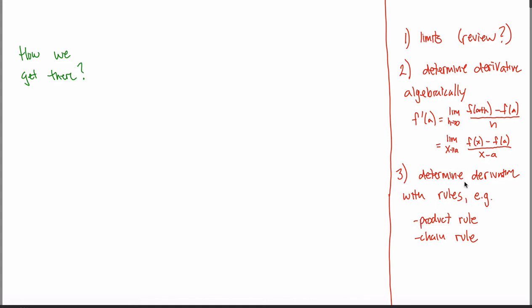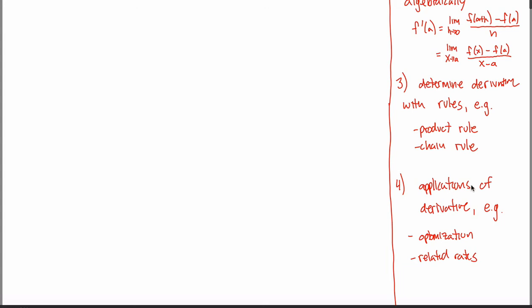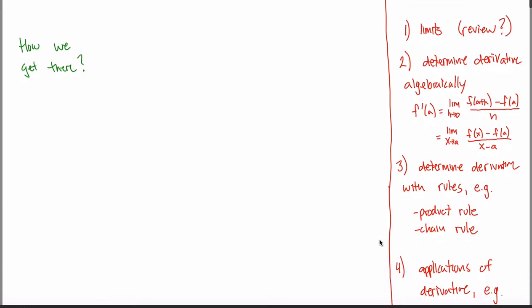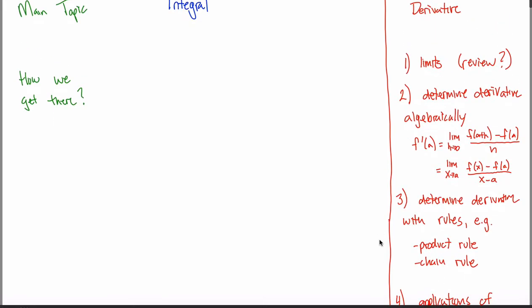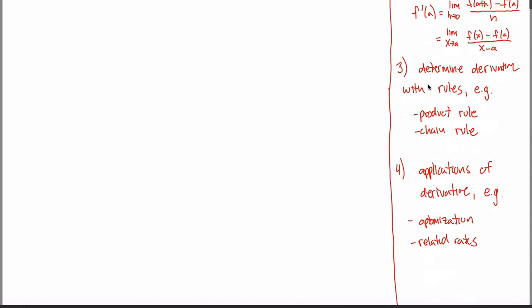That said, determining the derivative algebraically gives you an intuitive understanding, which is why every Calculus 1 class has you first figure out the derivative algebraically and then gives you a more powerful, quick shorthand using rules like the product rule and the chain rule. And then typically, after you figure out the derivative, you justify why you figured it out in the first place by looking at different applications — things like optimization and related rates, although there are lots of different applications you can do with the derivative.